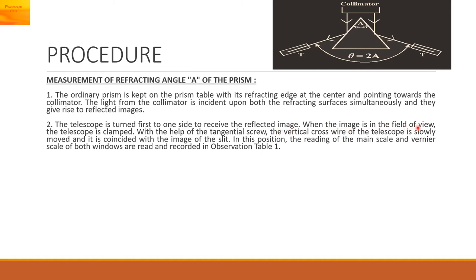When the image is in the field of view, the telescope is clamped. With the help of the tangential screw, the vertical cross wire of the telescope is slowly moved and it is coincided with the image of the slit. In this position, the reading of the main scale and vernier scale of both windows are read.